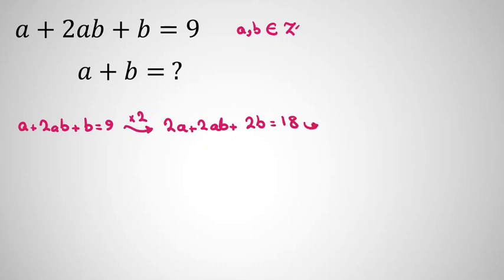And then the 2ab becomes 4ab. Now we can factorize. We say (2a plus 1) times (2b plus 1). Then we've created 4ab, 2a, 2b, and one more. So it will be 18 plus 1, equals 19.